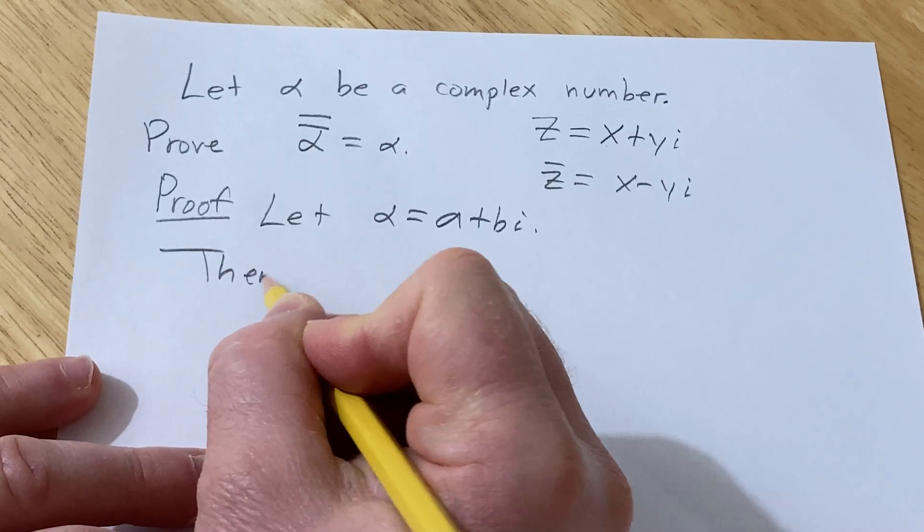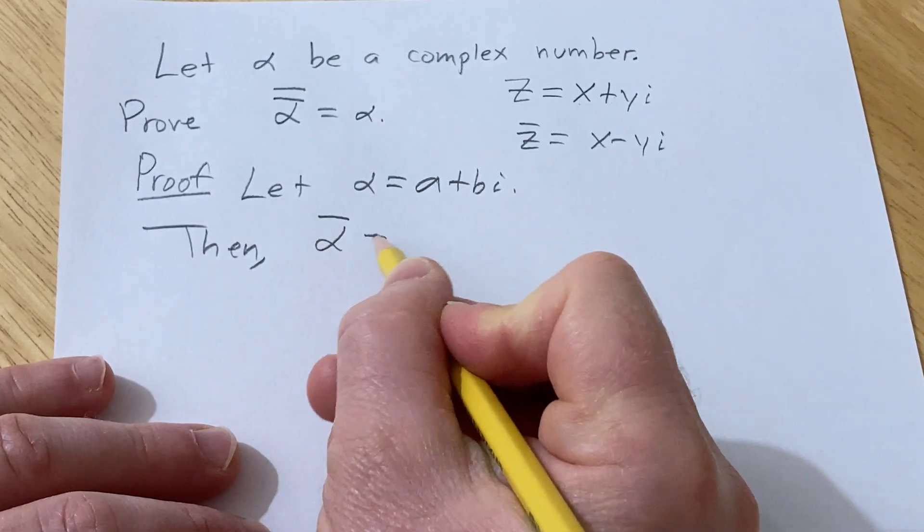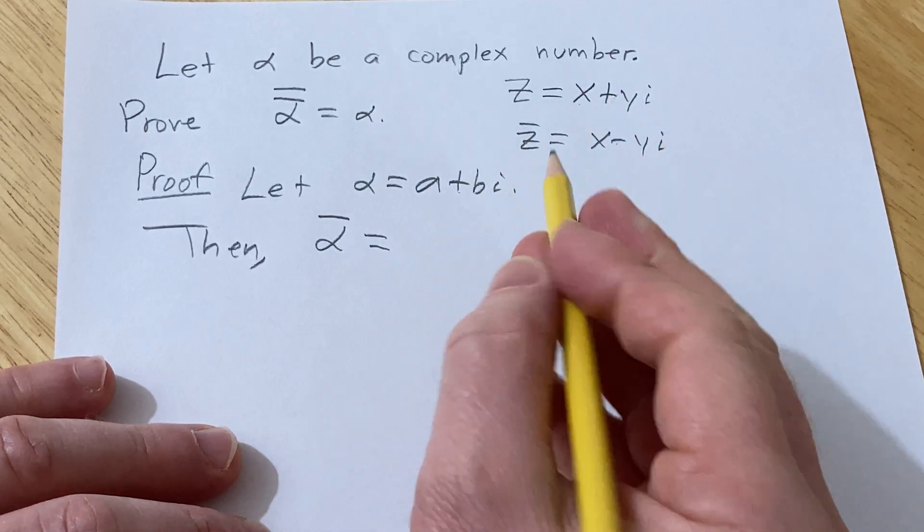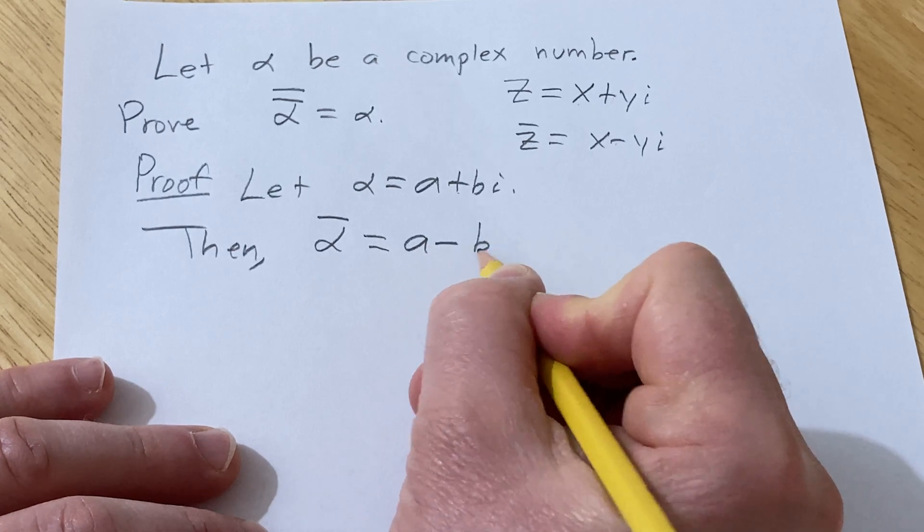So then the conjugate of alpha, well all you do is you switch the sign just like here in our definition of conjugate. So this is a minus bi.